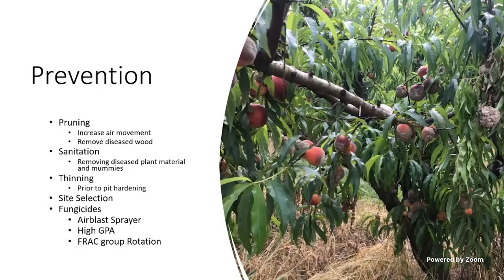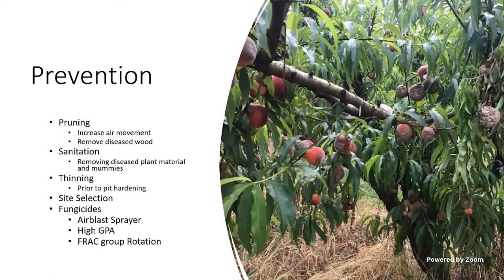Pruning is essential for peach production — it increases air movement, increases sunlight, and removes diseased wood that serves as inoculum for future infections. Removing mummies is important. Thinning is also important; prior to pit hardening, thinned fruit will basically shrivel up and go away without developing brown rot. If thinning is done after pit hardening, the dropped fruit can produce brown rot. Site selection also matters — whenever you can get up on a high-elevation site with good air movement, the better off you'll be.